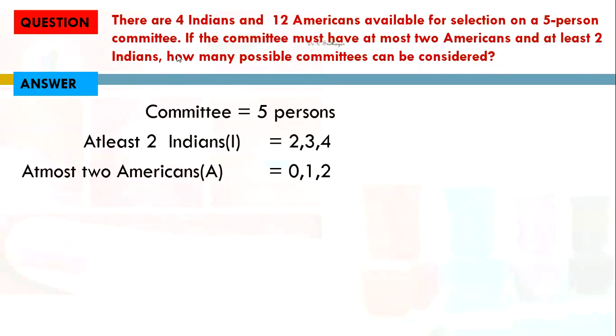Using these combinations, we must make a committee of 5 people. If we take 2 Indians, we need 3 Americans, but at most 2 are allowed. If we take 3 Indians and 2 Americans, that makes 5. Or if we take 4 Indians and 1 American, that also makes 5. These are the two possible conditions.